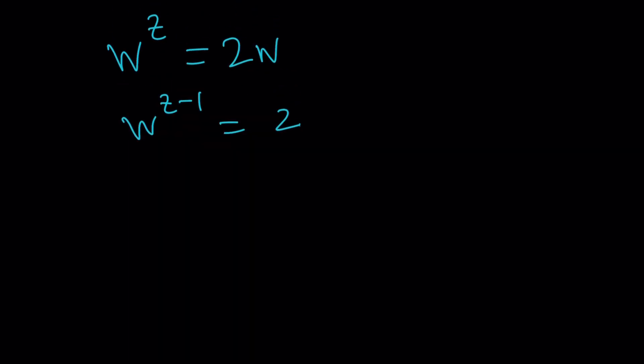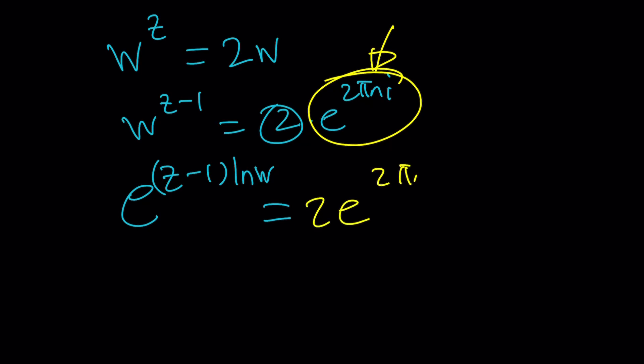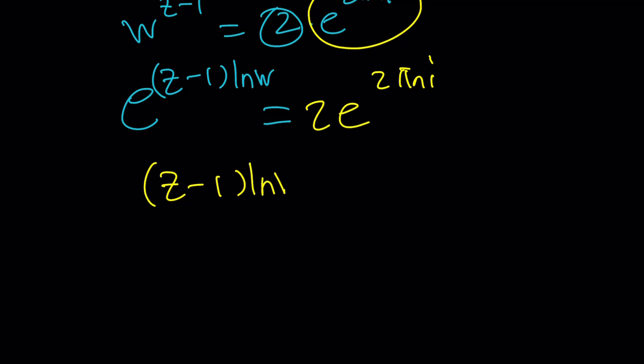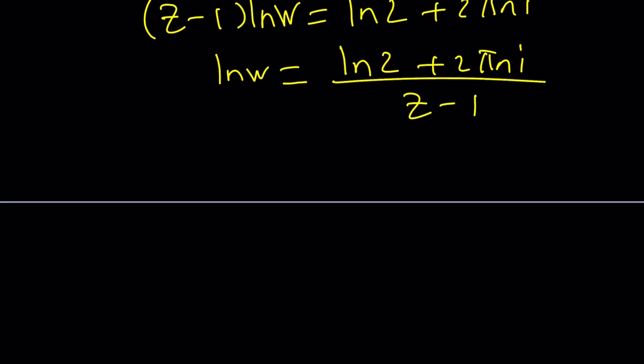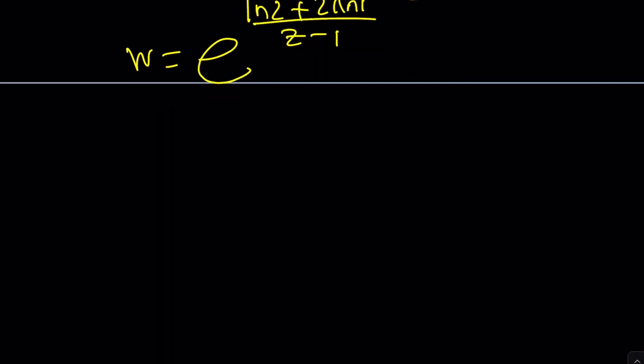For example you could just write this as e to the power z minus 1 ln w equals this two can basically be expressed as 2 times e to the power 2 pi ni. Remember we're always allowed to multiply by this because this is one in the complex world and after doing the natural log it would be like this. We would obviously natural log both sides that would give us z minus 1 ln w equals ln 2 plus 2 pi ni and then I would divide both sides by z minus 1 because remember our goal is to solve for w.